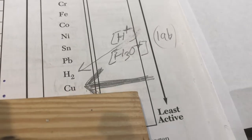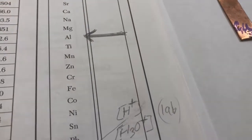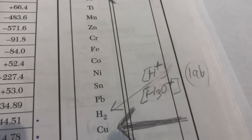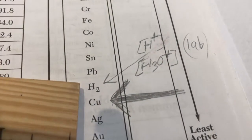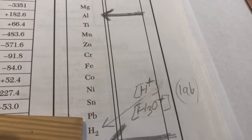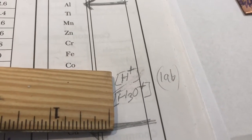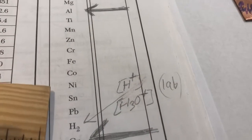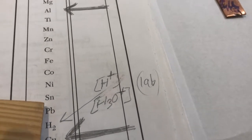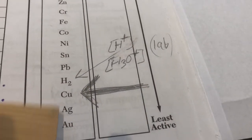I marked off the arrow right there — copper and aluminum — because we'll be looking at those two today. Before I move on, hydrogen is not a metal. But on Table J, hydrogen represents H+, H3O+, in terms of acid. So all these metals above hydrogen are more active than it, and the guys lower will be less active.